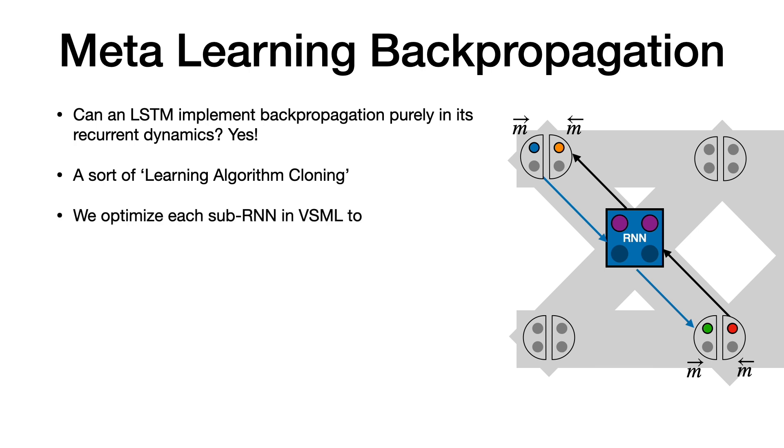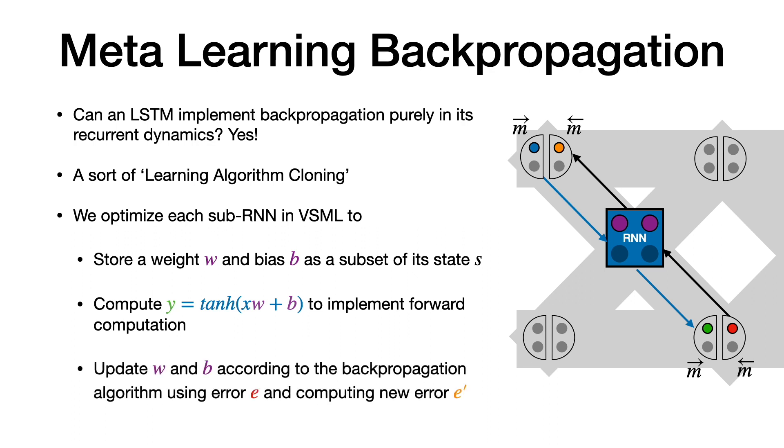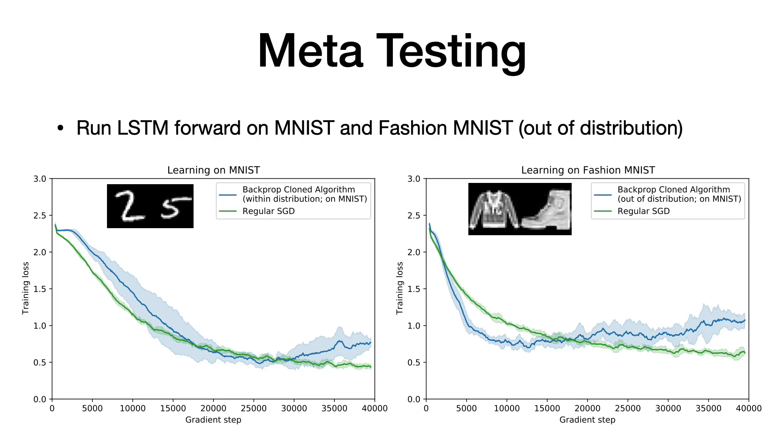We optimize each sub-RNN in VSML to store away W and bias B as a subset of its state. We also optimize it to compute tanh(XW + B) to implement neural forward computation. Finally, we optimize it to update W and B according to the backpropagation algorithm. And then we unroll the RNN on MNIST and Fashion MNIST. We refer to this as meta-test time. In the plots, we see that just by running the variable-shared meta RNN forward, the loss on the y-axis is reduced significantly. We thus have implemented backpropagation in the recurrent neural network itself. Though it is worth noting that there are some stability issues after a large number of gradient steps.